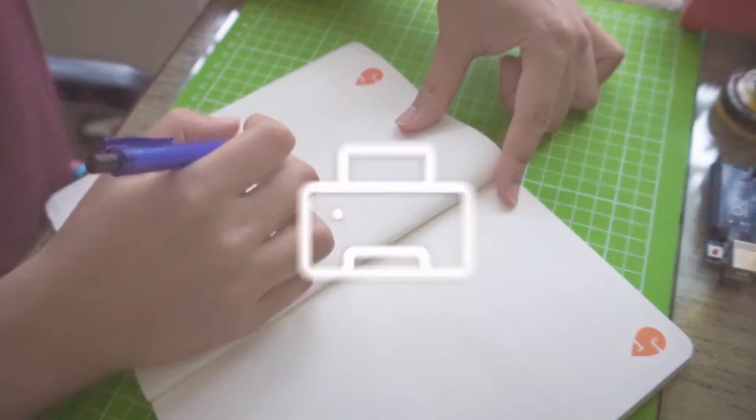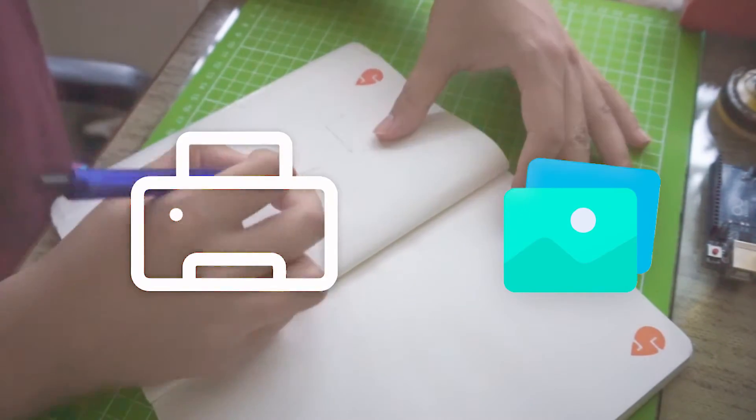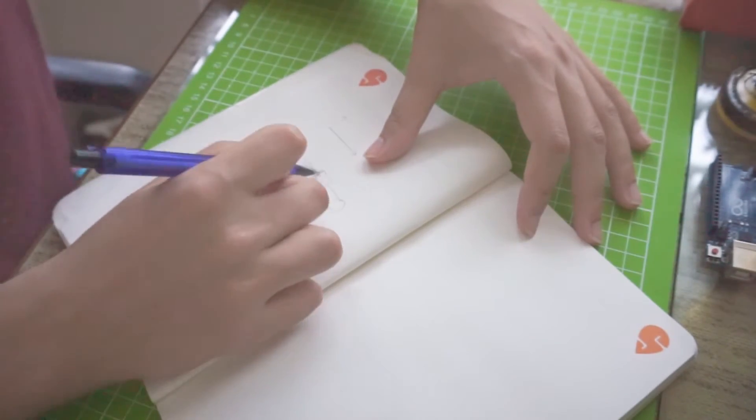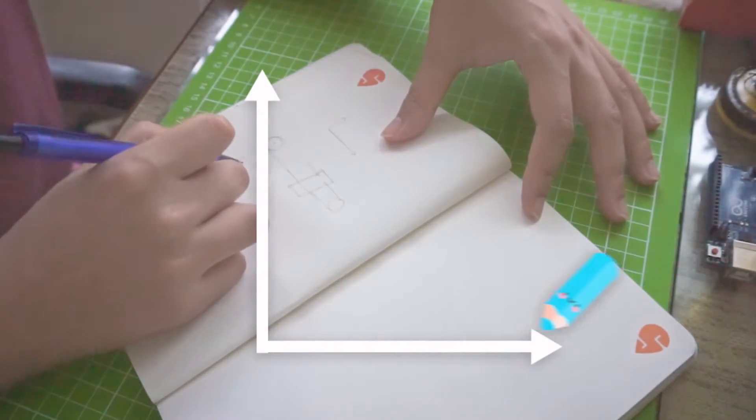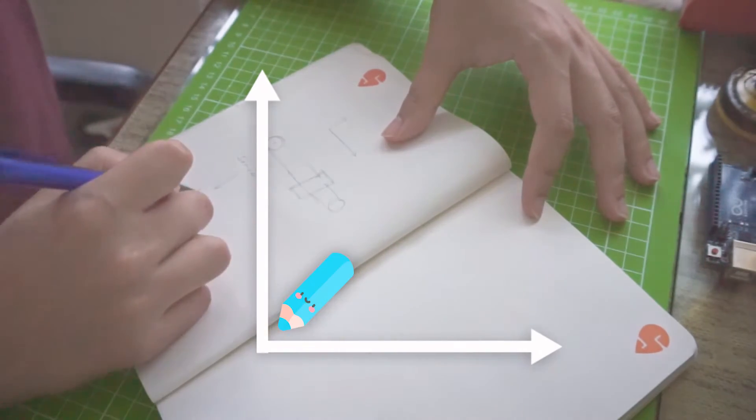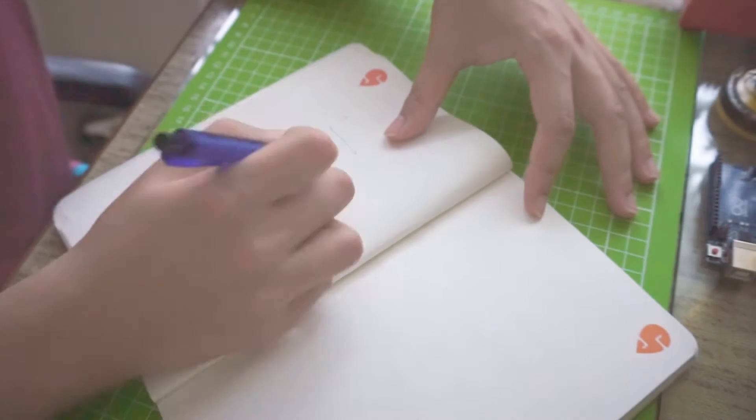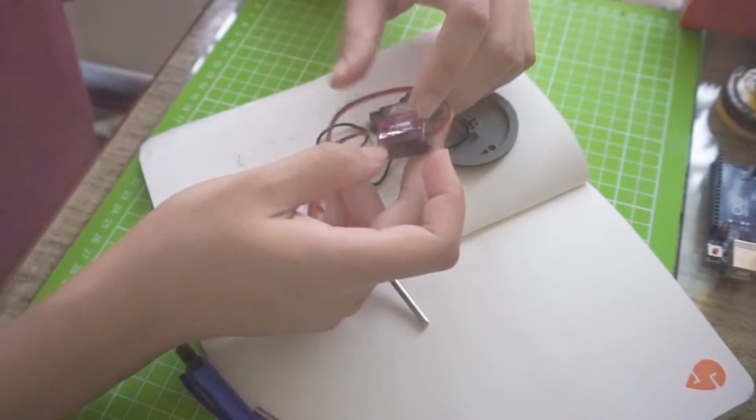I want to make something that captures a photo and draws it on any surface instantly. For this, I'll start by making a 2-axis slider. Due to the limitation of resources I have at home, I'll be using a few servos, pulleys and strings.